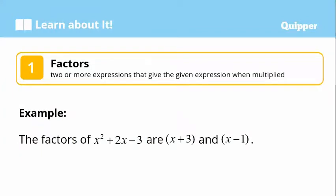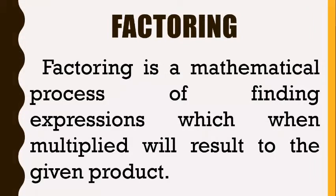Let's first define the terms. We have factors — factors are two or more expressions that give the given expression when multiplied. For example, the factors of x squared plus 2x minus 3 are (x + 3) and (x − 1), because when we multiply them it results in x squared plus 2x minus 3. Factoring is a mathematical process to find the expressions which, when multiplied, will result in the given product.